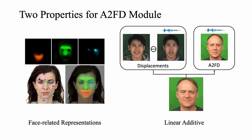Secondly, the relative displacements of the face-related representations are generally linear additive. We first calculate the displacements of the representations between an emotional video and its neutral results generated from the A2FD module, which is assumed to include emotion information. By adding the displacements onto the motion representations of an arbitrary person, we observe that the motion dynamics can be successfully transferred.